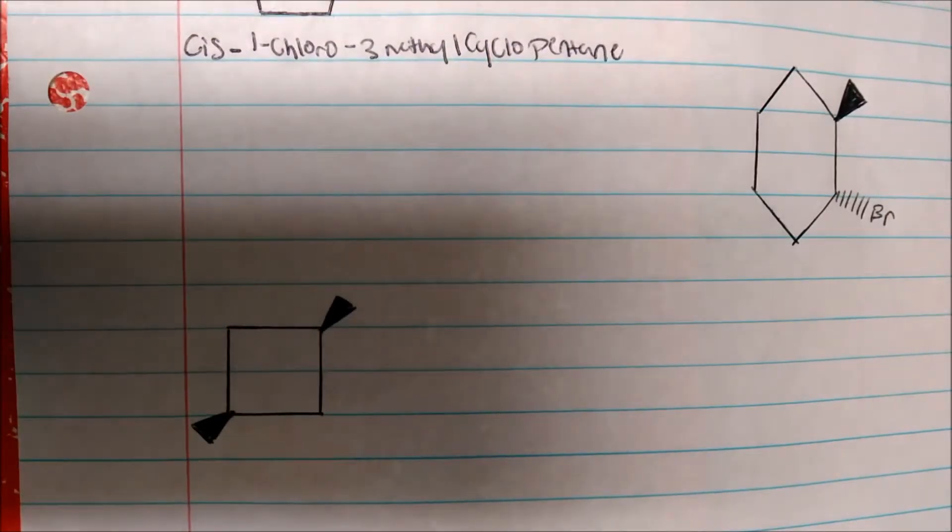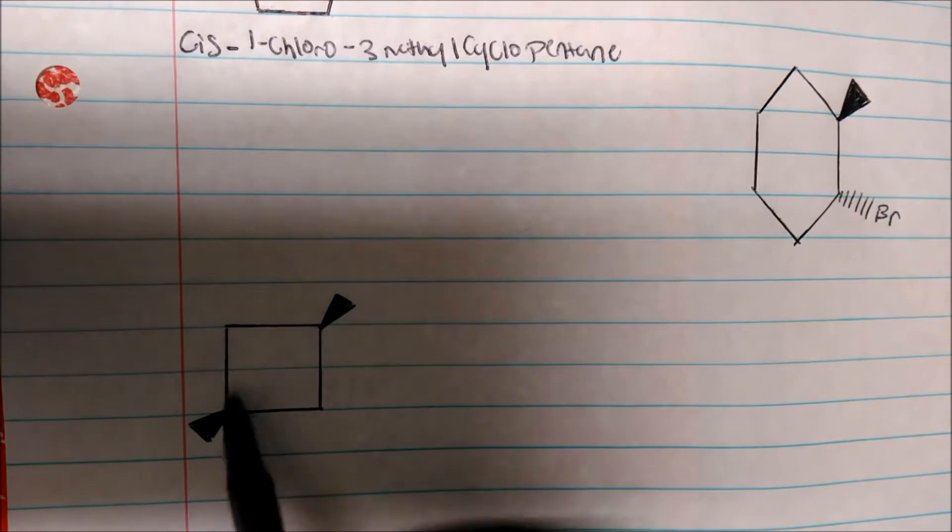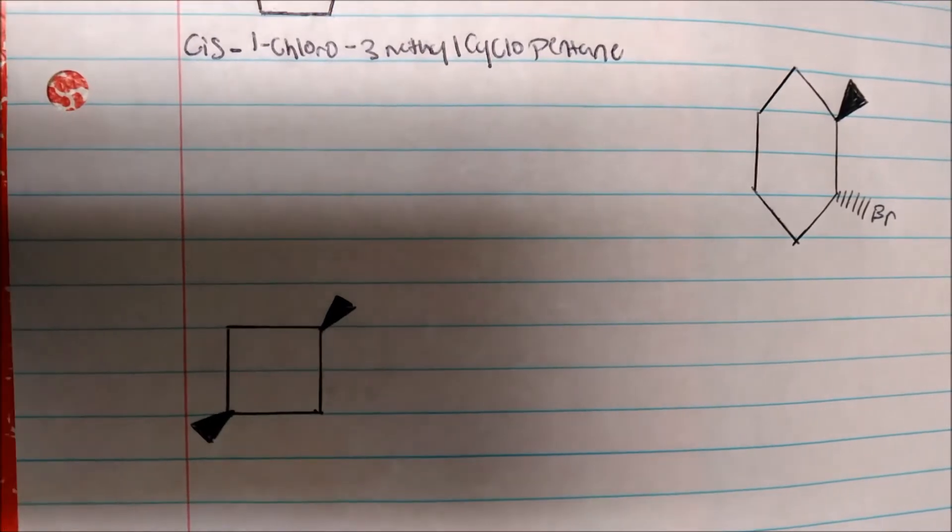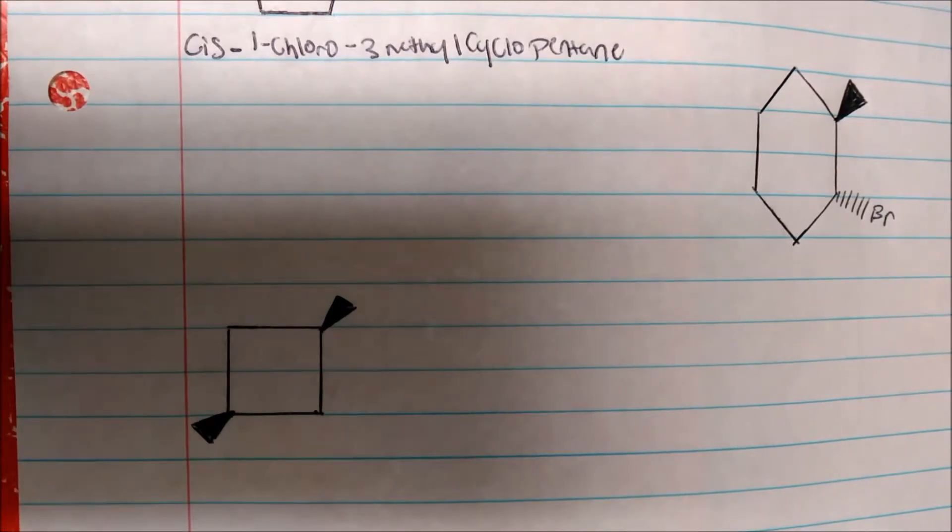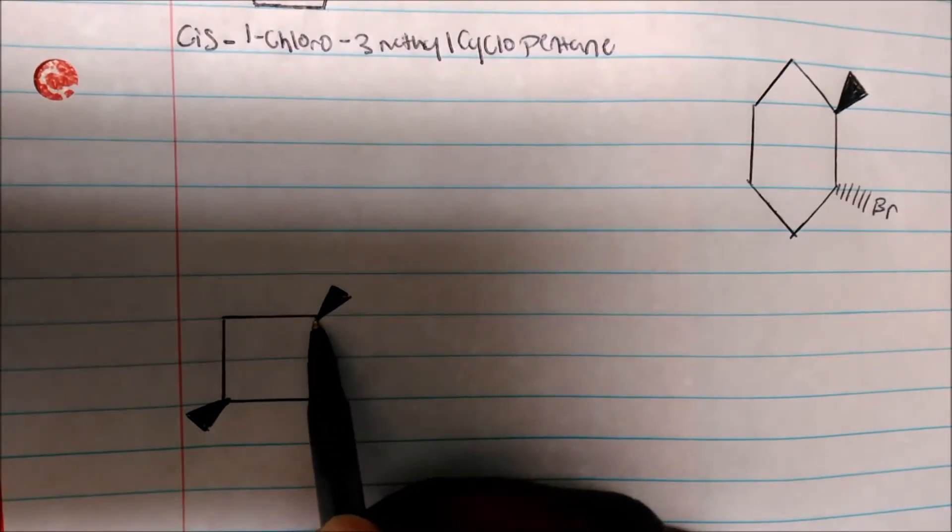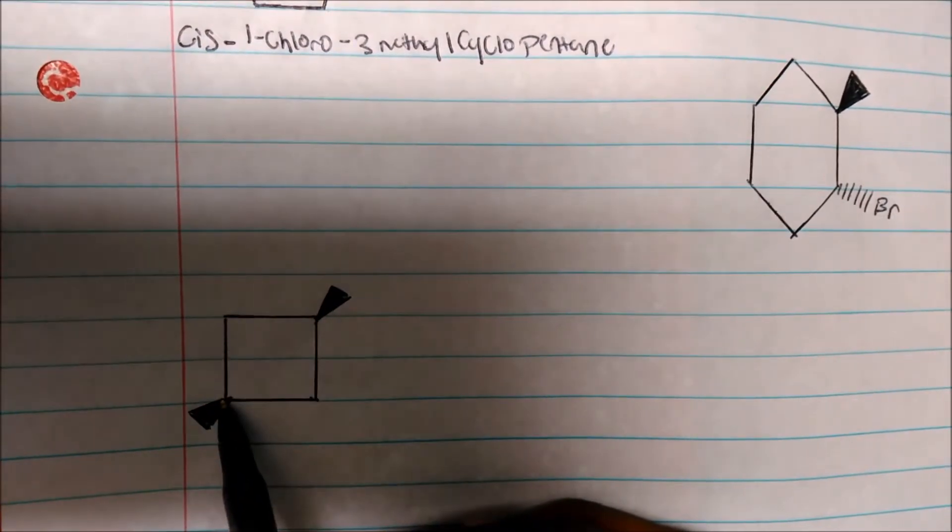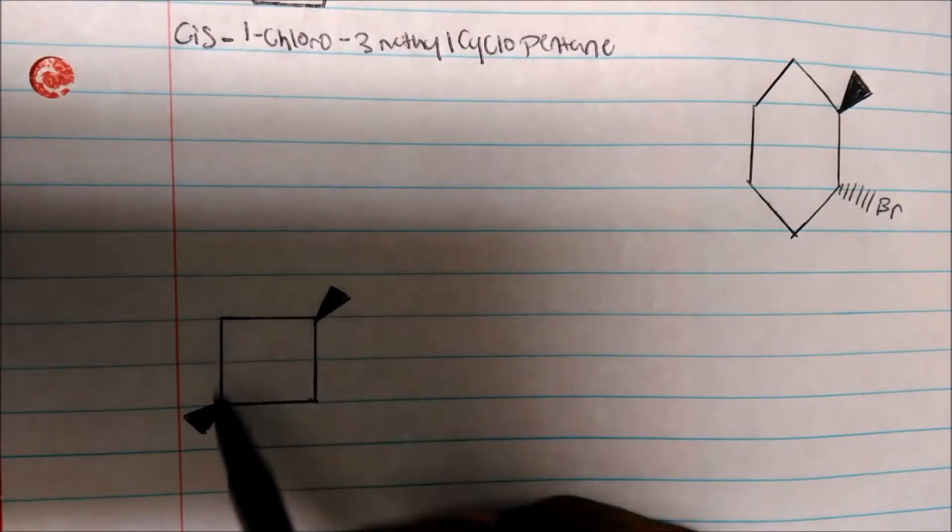How about this one? One, two, three, four. So this is butane. This is actually cyclobutane. On carbon 1, we have a methyl. On carbon 3, we also have a methyl.